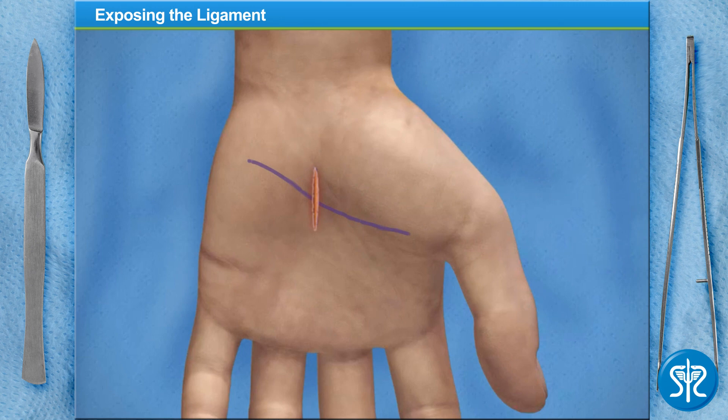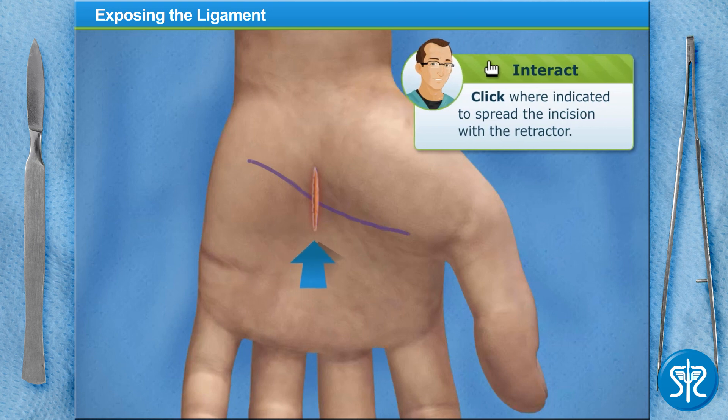Now we'll spread the incision wider to expose the transverse carpal ligament. This band of tissue is the cause of the problems. Place the retractors into the incision and spread it open.